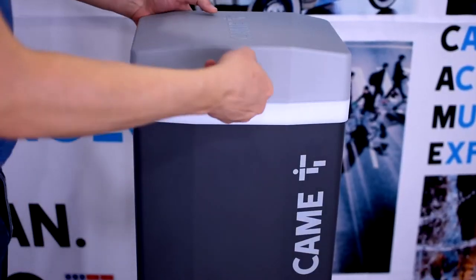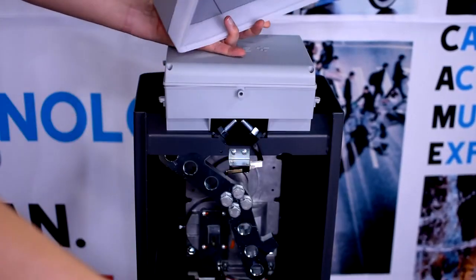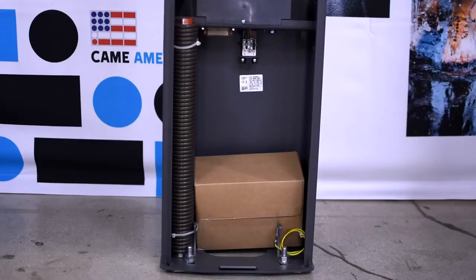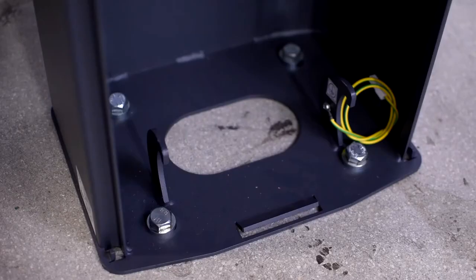First, remove the top cover and the hatch to get access to the inside of the barrier. You'll see that in the bottom we have a balancing spring and a box with some parts. Take them out so we can anchor the barrier.